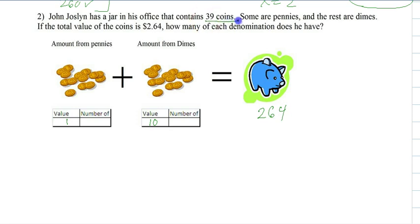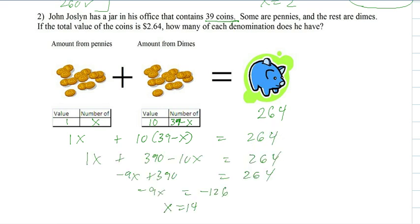Now, any time they give you a total, you make one of them x. The other one's 39 minus x. You can probably see this pattern going now with every single word problem. So x, 39 minus x, and then we multiply, solve it, and write the answer.